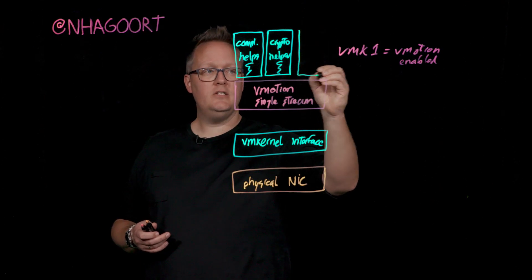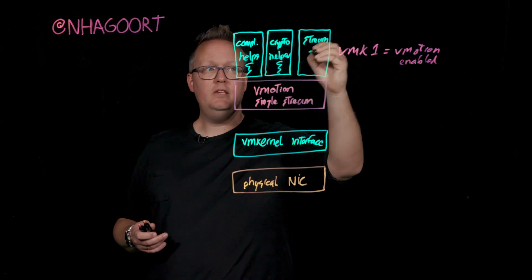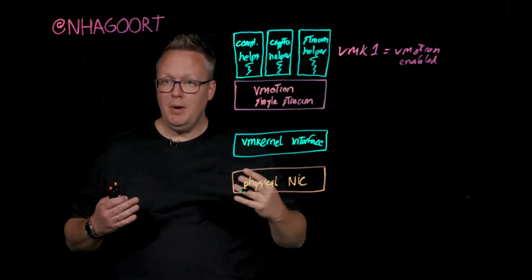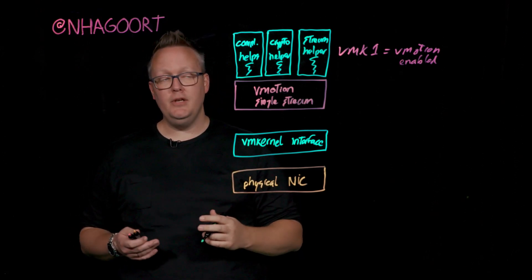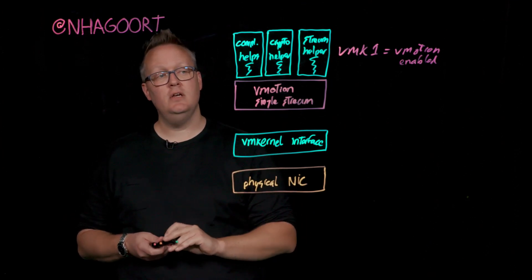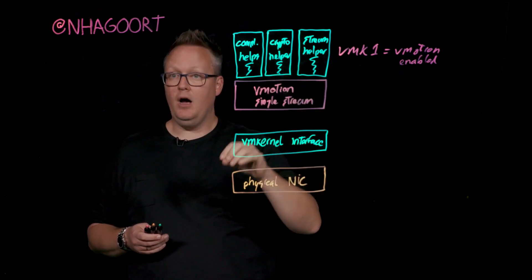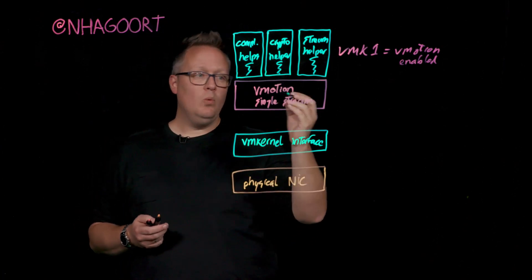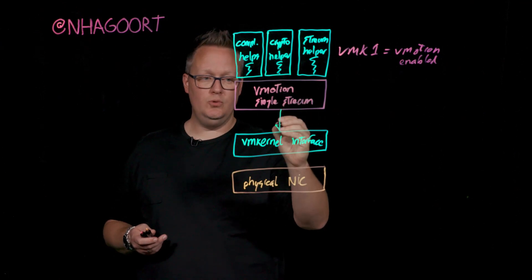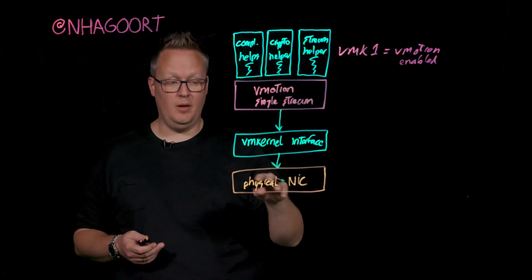The third one is an interesting one because that is the stream helper. This process, this helper, this thread basically is all about putting the data on the wire. In previous videos, we talked about how we copy memory from the source ESXi host to the destination ESXi host. Within a vMotion single stream, this helper puts the data on the wire. We see that we have the vMotion single stream which talks to the VM kernel interface, and the VM kernel interface is configured on top of a physical NIC.